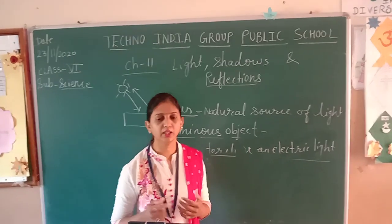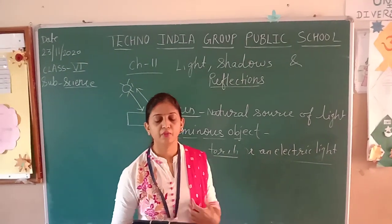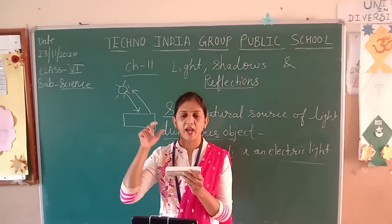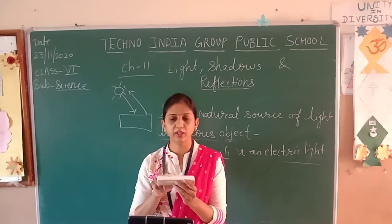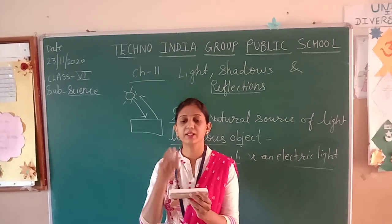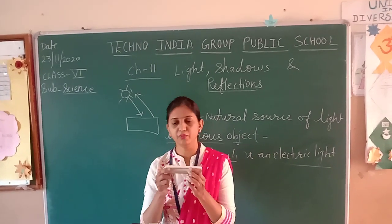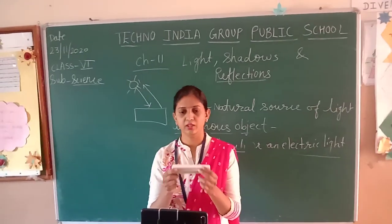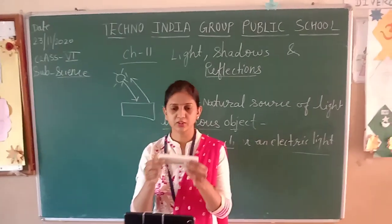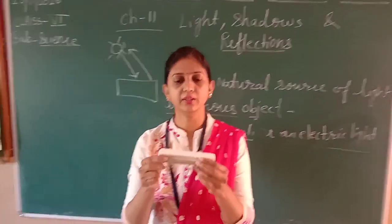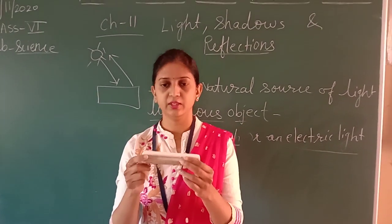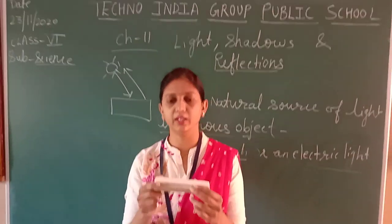How is it possible to see any object? When the light falls on any object — suppose this is the duster — the light falls on it and reflects from that object towards our eyes, then we can see this object. When the light reaches this object and the rays from this object reflect back to our eyes, then we can see any object.